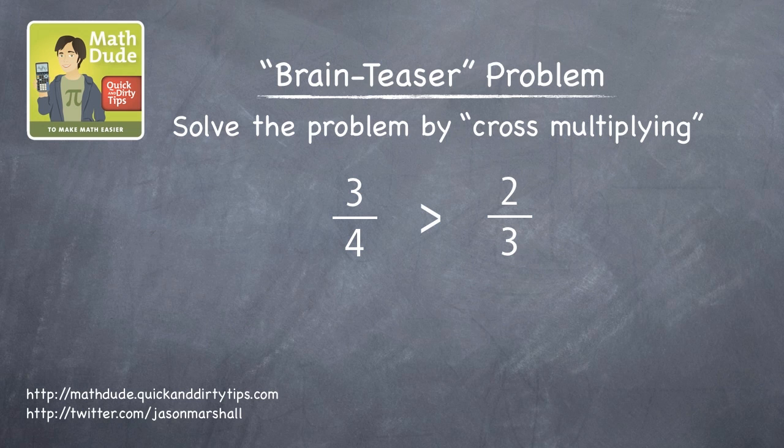The method is called cross-multiplying. Here's how it works. Instead of directly comparing the fractions, let's do the following. First, multiply the numerator of the first fraction by the denominator of the second. Three times three is nine. Write that below.